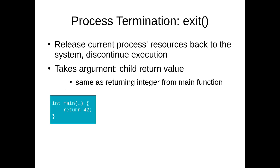The exit system call effectively says you don't want to execute anymore. It's the only way for a process to intentionally terminate its own execution. This releases all of the process's current resources back to the system and discontinues execution — freeing all memory in the virtual address space, the process control block, and the kernel stack, with a small exception we'll see in a few slides.